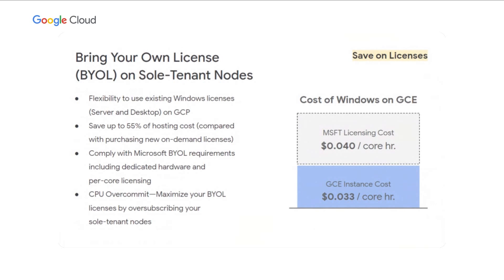Windows licenses are a perfect example for using BYOL, where licensing requirements are supported on sole tenant nodes — dedicated hardware to support license reporting and compliance. With CPU overcommit, you can oversubscribe your hosts and maximize unlimited virtualization licenses, helping you save money by maximizing BYOL licenses and reducing per-socket, per-core licensing requirements. This is ideal for underutilized workloads with uncorrelated bursts like DevTest or VDI.